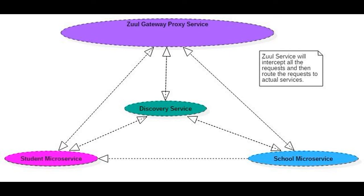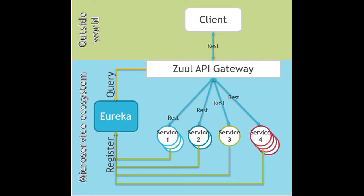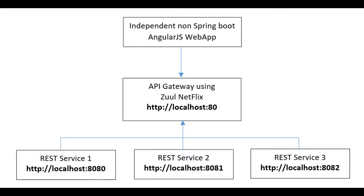Zuul is an edge service that proxies requests to multiple backing services. It provides a unified front door to your ecosystem, which allows any browser, mobile app, or other user interface to consume services from multiple hosts. You can integrate Zuul with other Netflix stack components like Hystrix for Fault Tolerance and Eureka for Service Discovery, or use it to manage routing rules, filters, and load balancing across your system. Most importantly, all of those components are well adapted by Spring Framework through the Spring Boot Cloud approach.